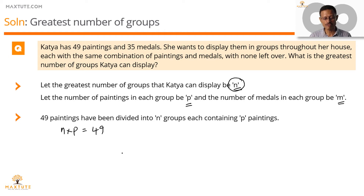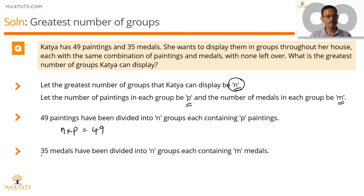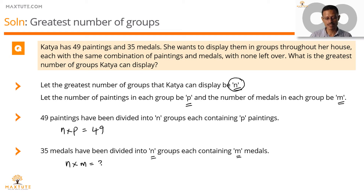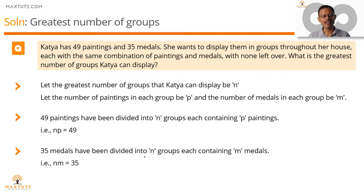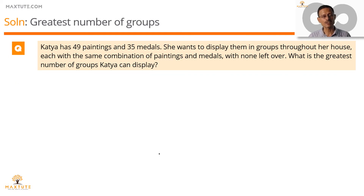Extending the logic for the medals: she's got 35 medals, dividing them into N groups with M medals per group. So N × M = 35. It's quite evident that N divides 49 and N divides 35, which means N is a factor of 49 and N is a factor of 35 — so N is a factor common to both 49 and 35.